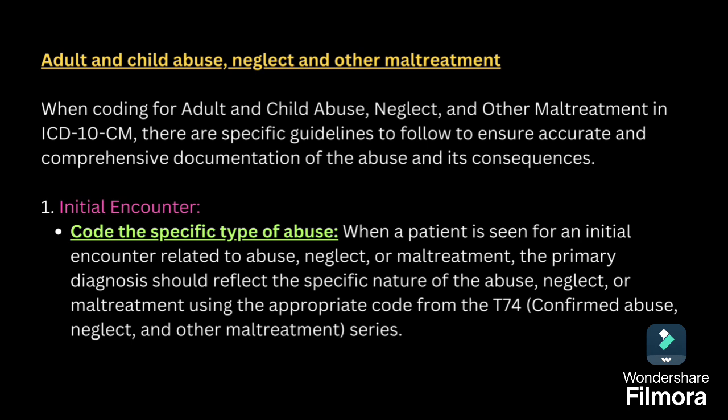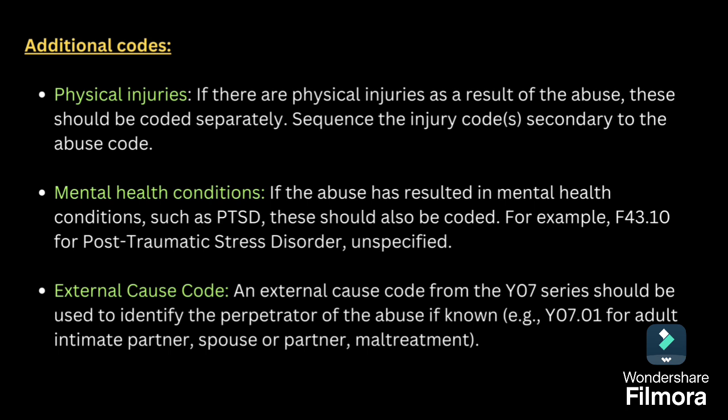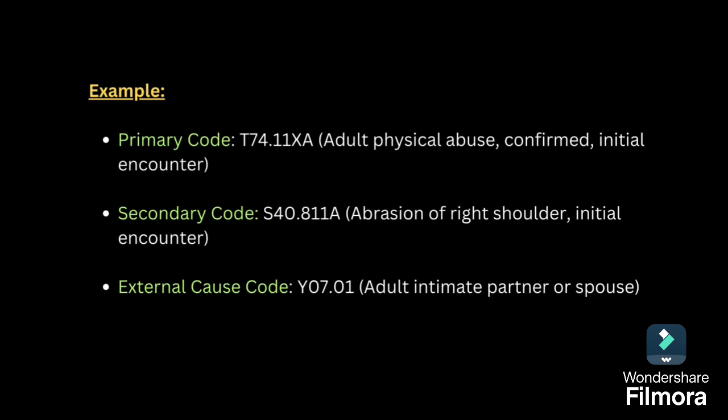Adult and child abuse, neglect and maltreatment: when coding for adult and child abuse in ICD-10CM, there are specific guidelines to follow. First, code for the specific type of abuse. When a patient is seen for an initial encounter related to abuse or maltreatment, the primary diagnosis reflects the abuse, neglect or maltreatment. If any physical injuries are present, code them additionally; any resulting mental health conditions should also be coded. For the external cause code, if the perpetrator is known, code Y07. An example is provided to go through.